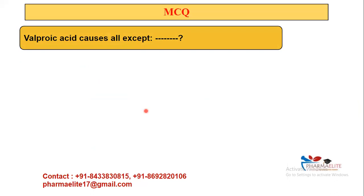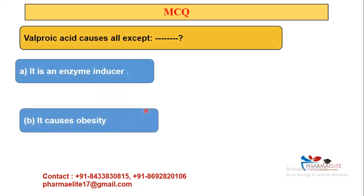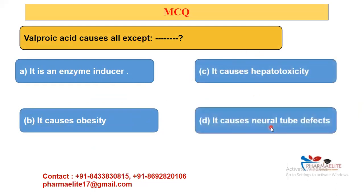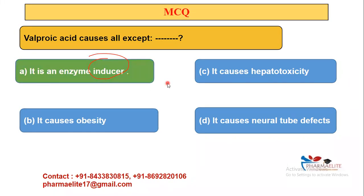Next MCQ: Valproic acid causes all except — options are: enzyme inducer, obesity, hepatotoxicity, neural tube defects. Remember: valproic acid is a potent microsomal enzyme inhibitor, not an enzyme inducer. So the wrong statement — and hence the answer — is that it is an enzyme inducer. It is actually an enzyme inhibitor.